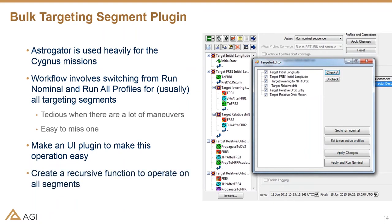This plug-in became very handy because we could just check all targeters to run their differential correctors and then switch them back. It came down to a simple recursive function that loops through all segments, and if the current segment is a target segment, does the thing; otherwise ignores it and moves on. This is more just a high-level overview of what can be done — I would have loved to show code in detail, but there isn't time.